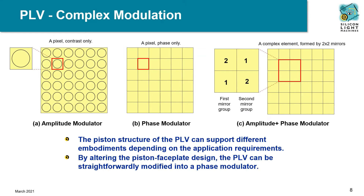The PLV may also be used as a phase modulator by altering the pixel surface to be purely reflective. This approach enables high-speed 2D fully holographic control through phase modulation, or even elements of combined amplitude and phase modulation formed by multiple mirrors.